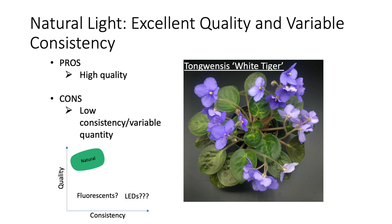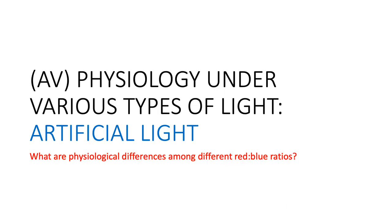To put this in visual perspective, natural light provides the best quality of light but on the lower end for consistency depending on where you live. This leads us to the next topic: looking at plants grown under artificial lights, and the physiological differences among different red-to-blue ratios in fluorescent or LED lights.